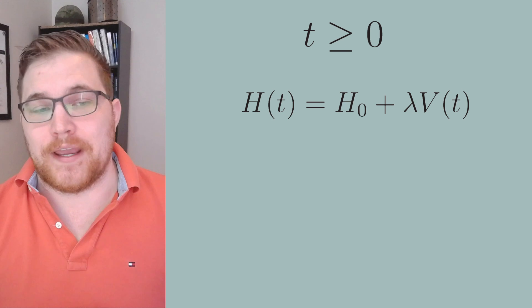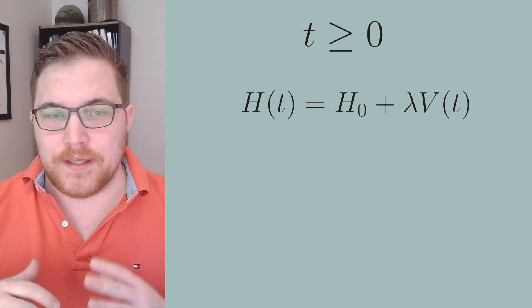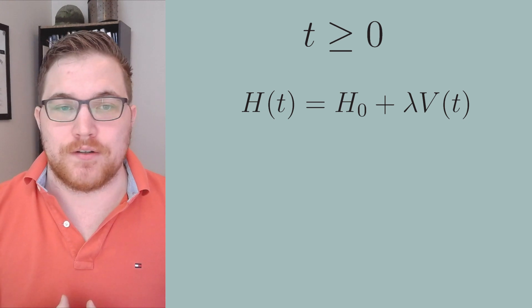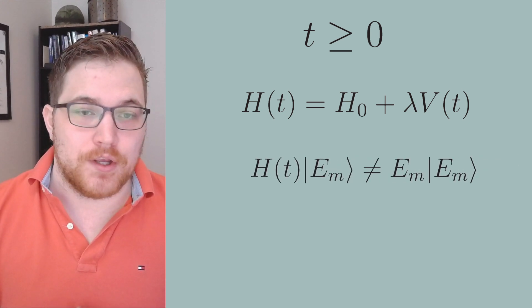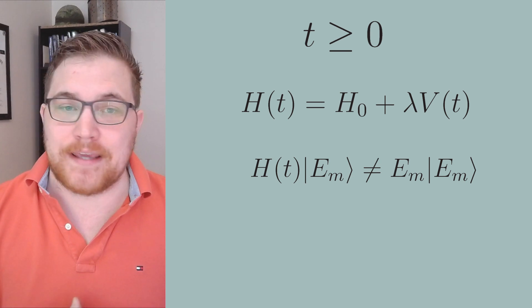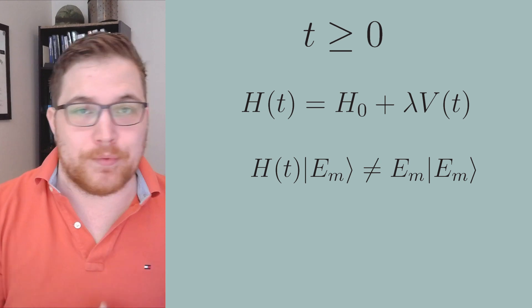We will assume that lambda here is quite small. Now we are going to assume that the perturbation changes the energy eigenbases of the total Hamiltonian. So our previous eigenkats are no longer energy eigenkats of the new Hamiltonian.